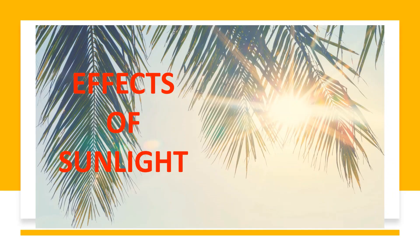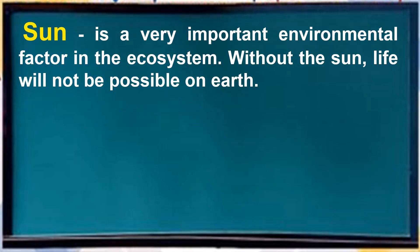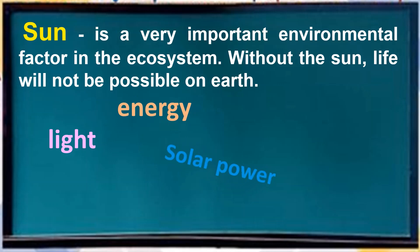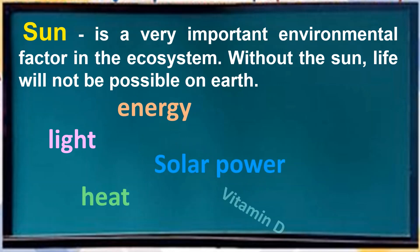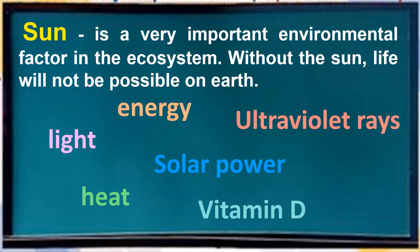Next, the effects of sunlight. The sun is a very important environmental factor in the ecosystem. Without the sun, life will not be possible on earth because it is the source of light energy, solar power, heat, vitamin D, and ultraviolet rays.